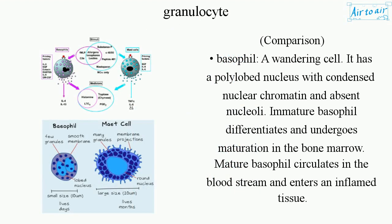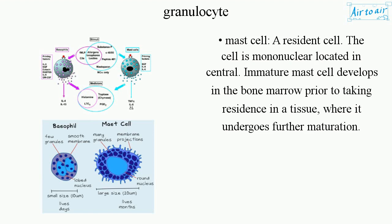Comparison — Basophil: a wandering cell. It has a polylobed nucleus with condensed nuclear chromatin and absent nucleoli. Immature basophil differentiates and undergoes maturation in the bone marrow. Mature basophil circulates in the bloodstream and enters inflamed tissue. Mast cell: a resident cell. The cell is mononuclear. Immature mast cell develops in the bone marrow prior to taking residence in a tissue, where it undergoes further maturation.